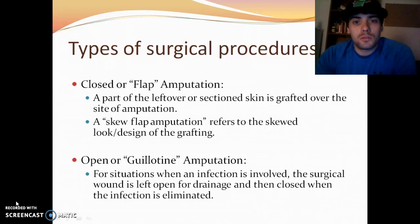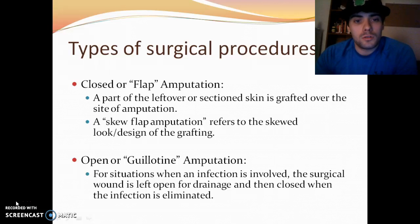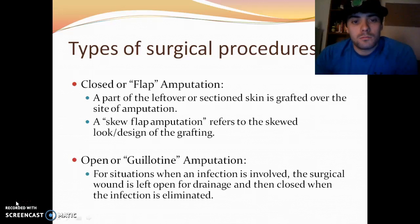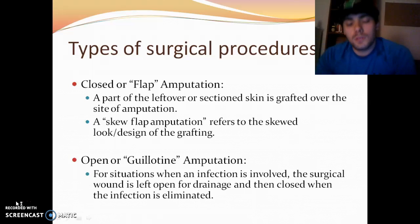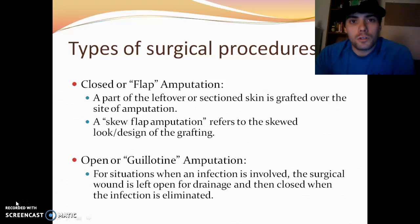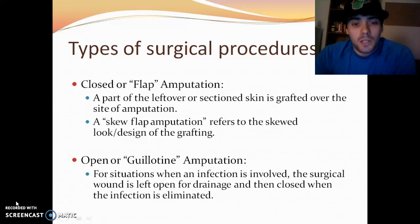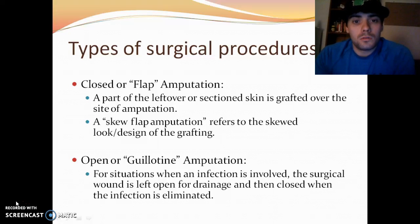There are different types of surgical procedures. We have a closed or flap amputation. Basically, when a portion of the leg or arm is cut off, they'll take leftover soft tissue and graft it over the side of the amputation. Then you have a skew flap amputation — it's the same thing, but refers to the skewed look of how they place and graft the soft tissue.